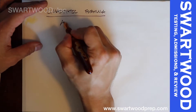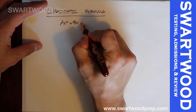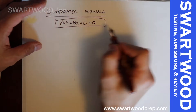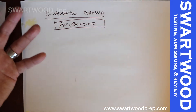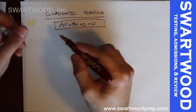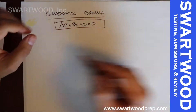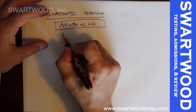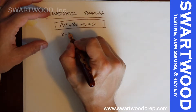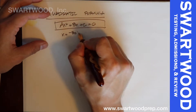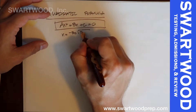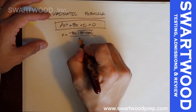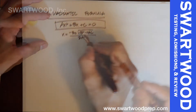Moving to the quadratic formula — the one that's been beaten into you. You start with a quadratic equation in the standard form, and when you solve it by completing the square, you get: x equals negative b plus or minus the square root of b squared minus 4ac, all divided by 2a.